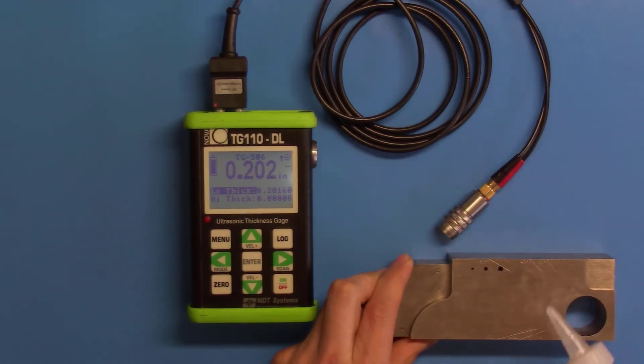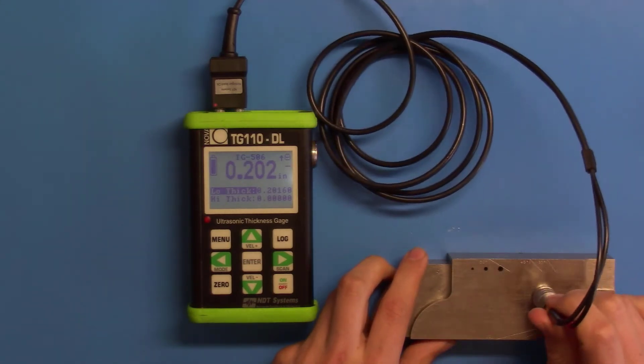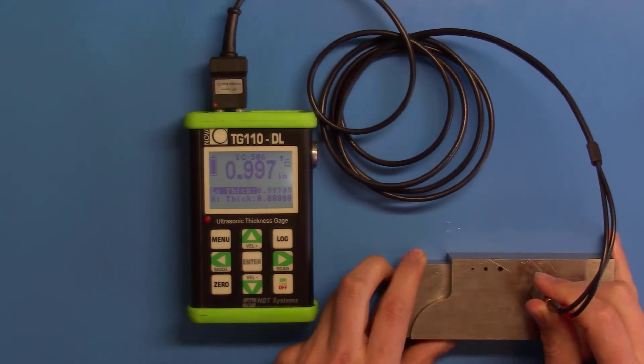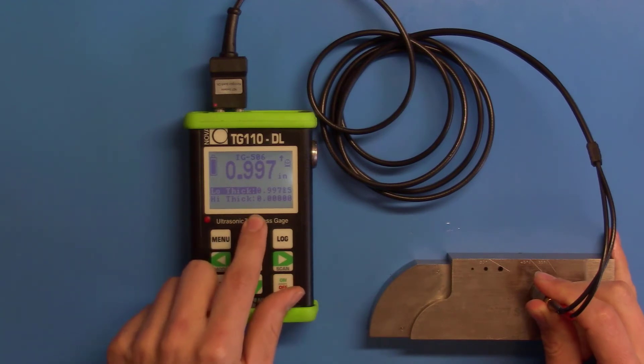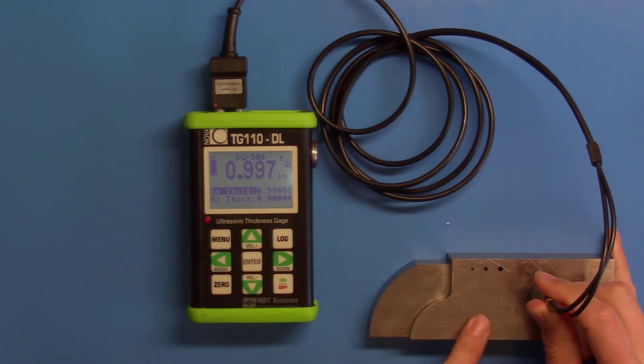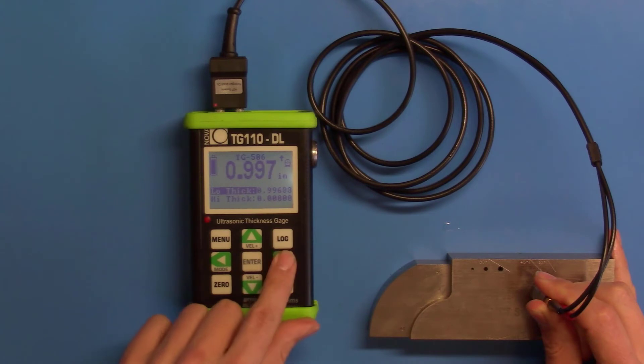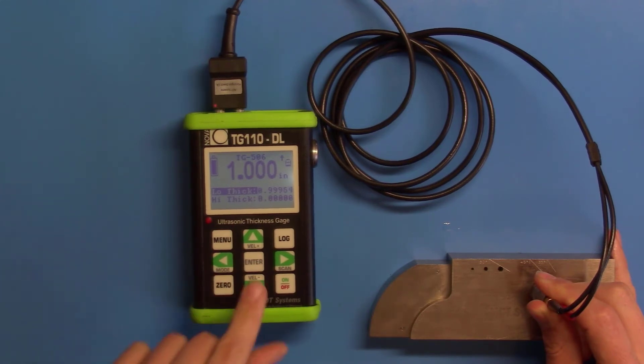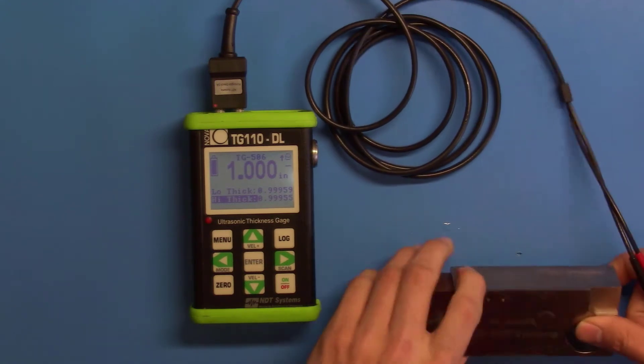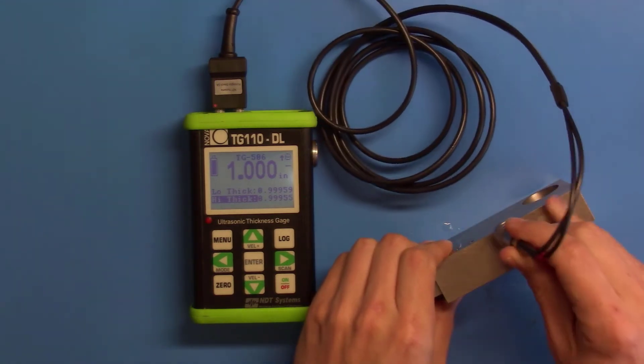First, we'll couple the probe to the thin section. And we'll adjust the displayed thickness to the actual thickness using the left and right arrow keys. While still coupled to the low thickness, push the down arrow key to go to high thickness. Now go ahead and couple to the high thickness section.